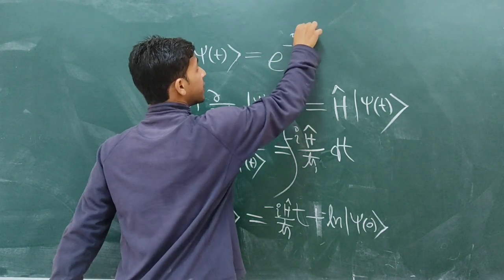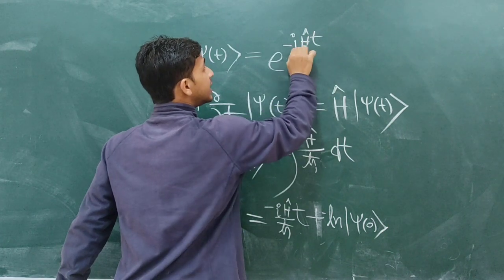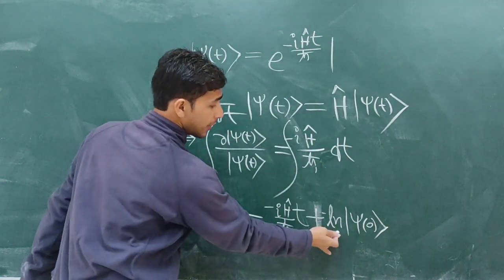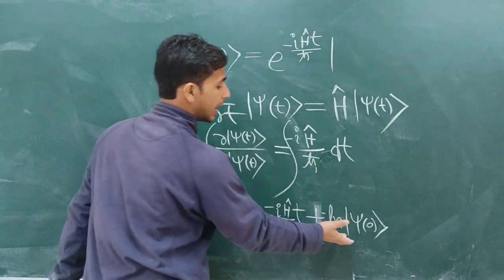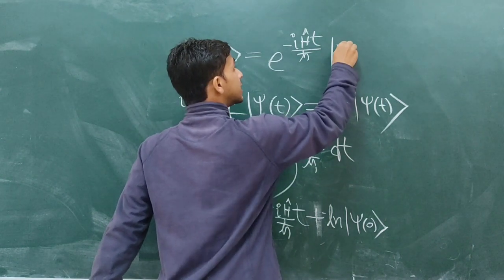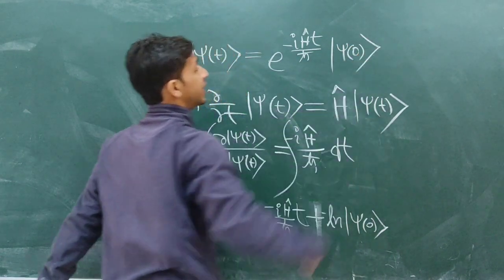It will be equals to e to the power exponential power negative Hamiltonian operator times small t divided by ℏ. This ln will be removed and it will be multiplied by this e, so you will get ψ₀ state.